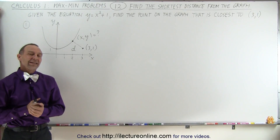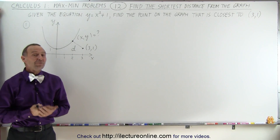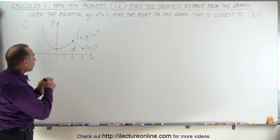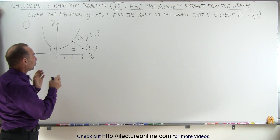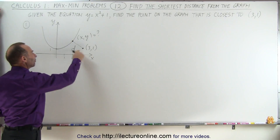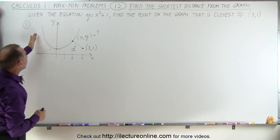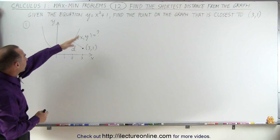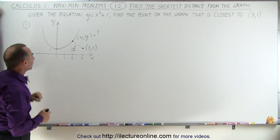Welcome to ElectronLine. Another typical max-min problem is finding the point on a graph that has the closest distance to a given point. So here we have an equation, y equals x squared plus 1, and the associated graph with it.